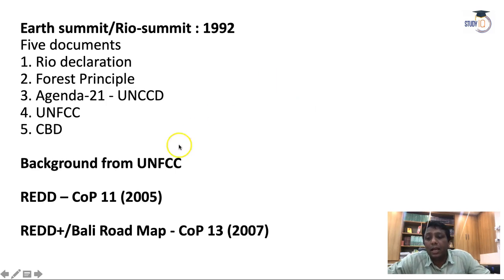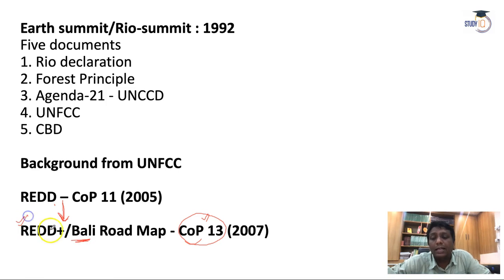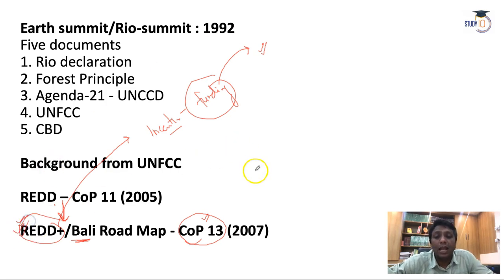REDD was further modified after two years. At COP 13 held in Bali, Indonesia — with India's initiative — REDD evolved into REDD+. REDD+ introduced incentive provisions, meaning funding provisions: developed countries provide funding to developing nations so they can introduce more forestation in their areas and ultimately increase the carbon sink, reducing atmospheric carbon emissions.